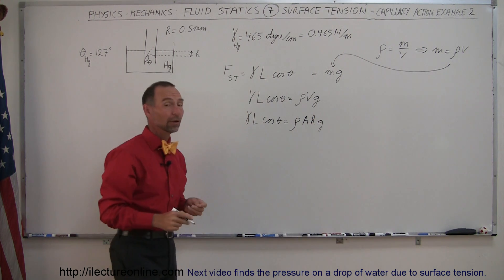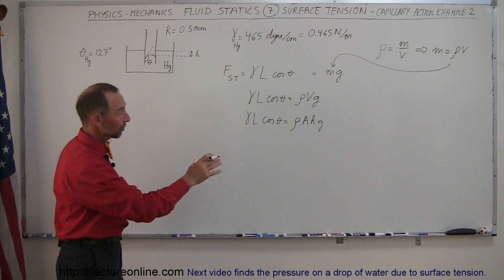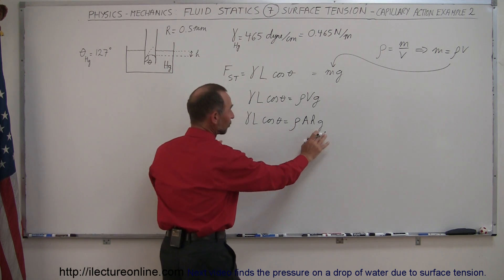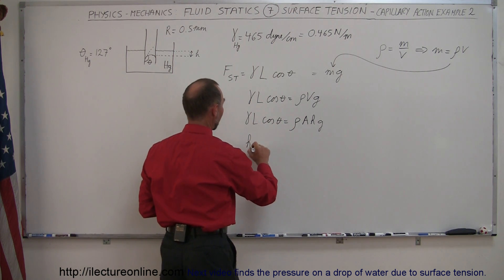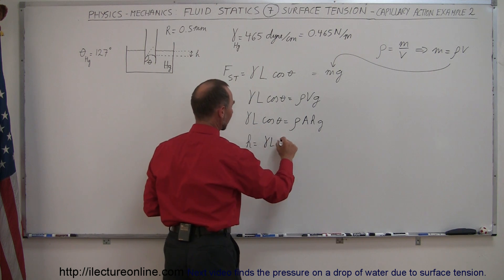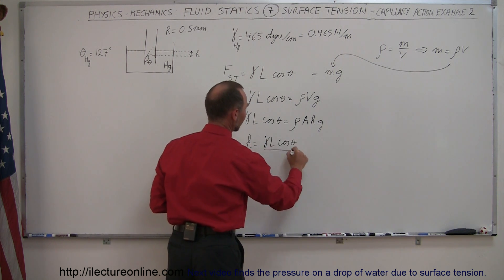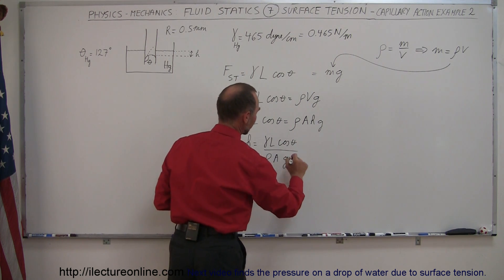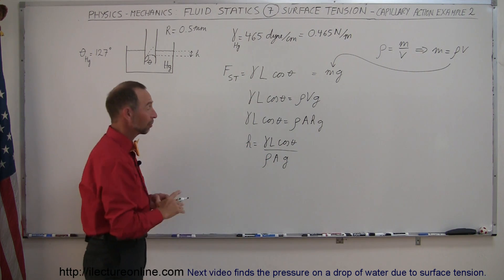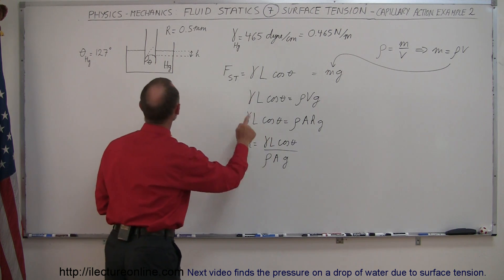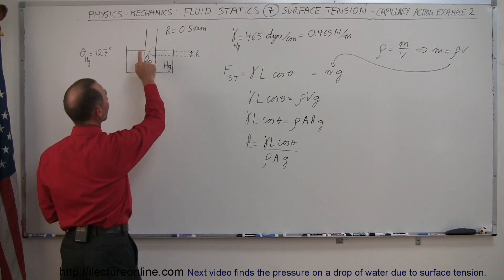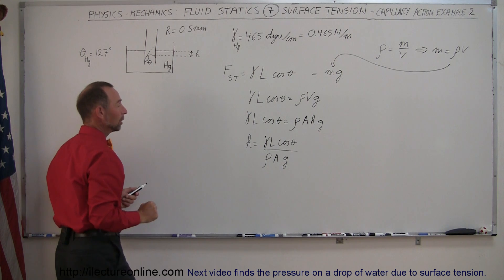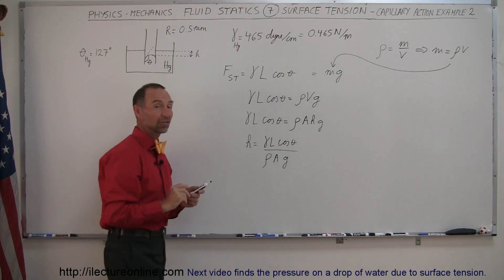And now we have the h that we're looking for. So we're going to then go ahead and divide both sides by rho a g and turn the equation around. So we have height is equal to the coefficient times l times the cosine of theta divided by the density, the cross-sectional area, and g. Now, the last thing we have to do now is plug in what l is equal to. And l will be the circumference on the inside of the tube. And then a would be the cross-sectional area.